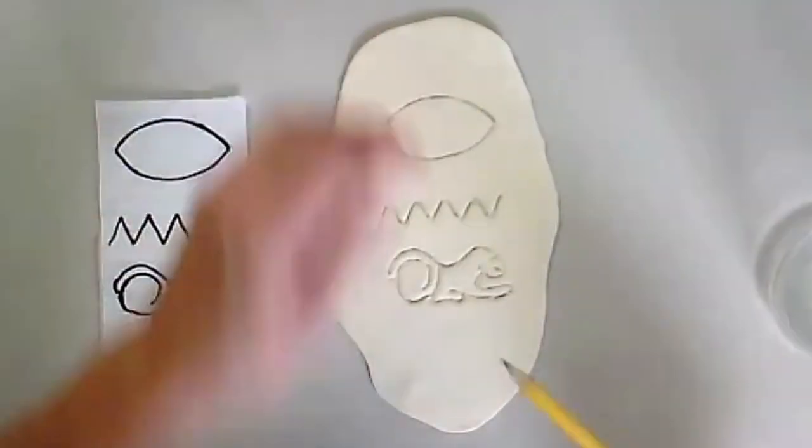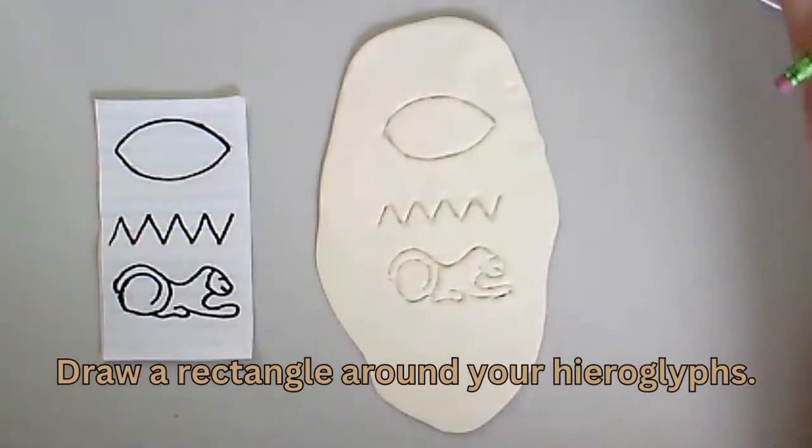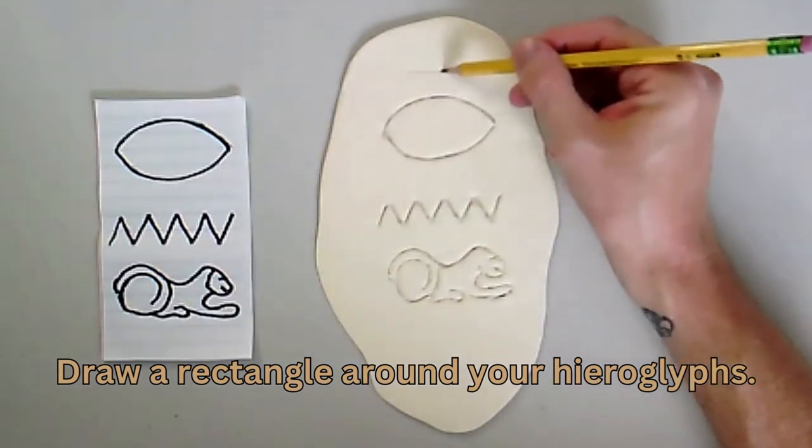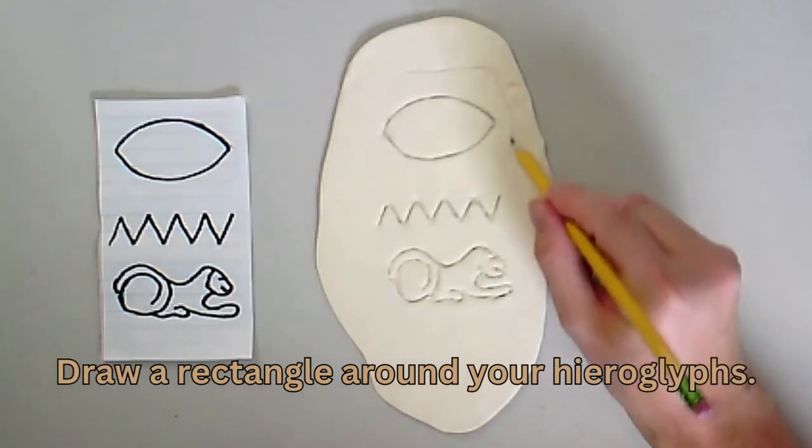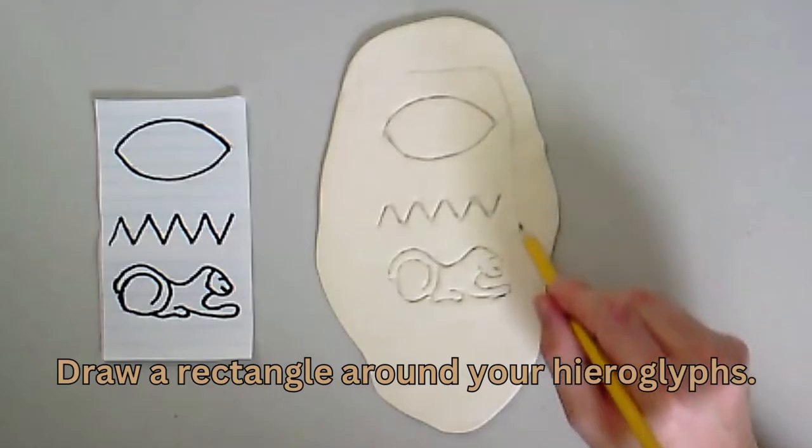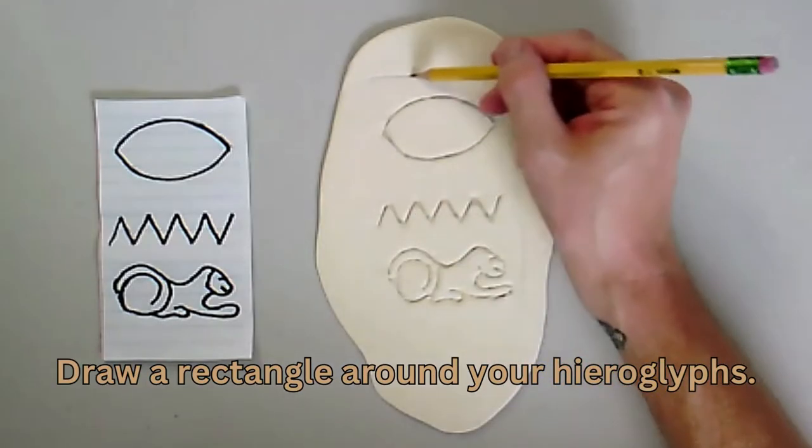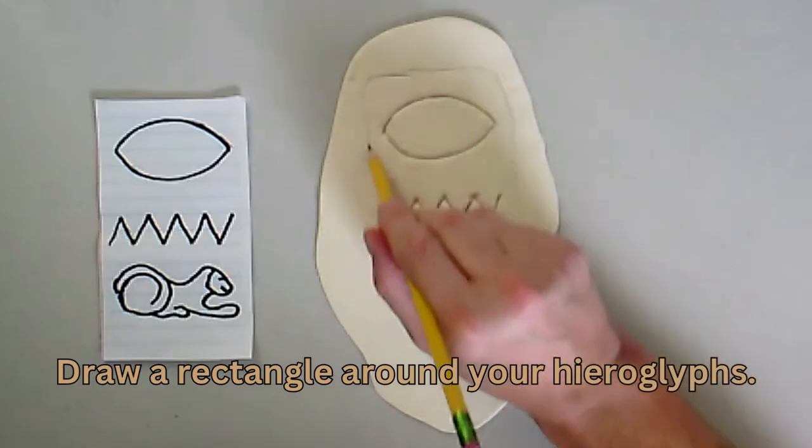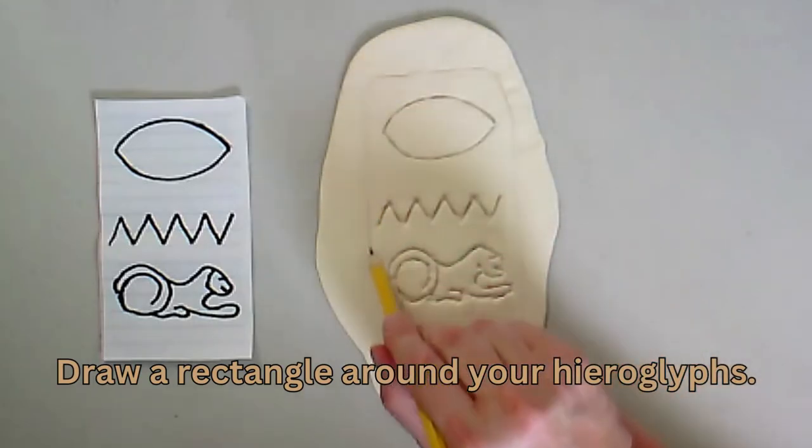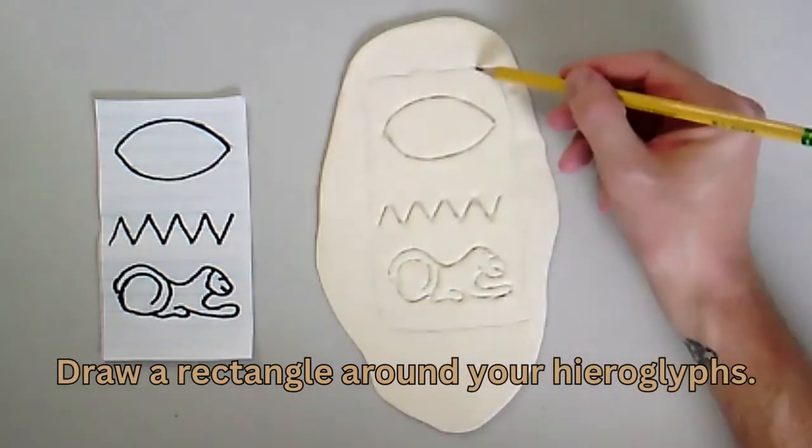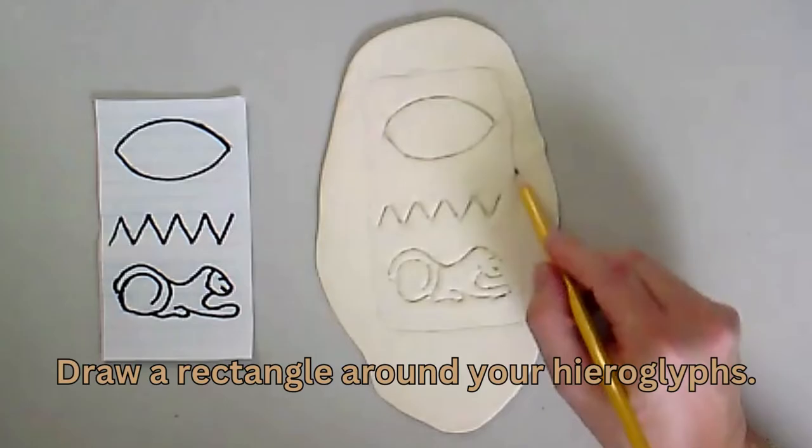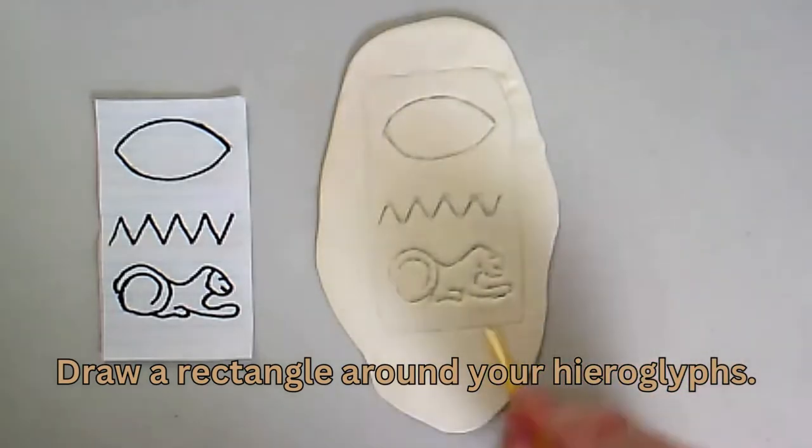Our next step is to draw the cartouche. So we're just going to draw a rectangle shape around our hieroglyph letters. Just using your pencil, you start out with just a rectangle and then round the edges. We're going to be cutting this out. You can draw your rectangle with some rounded edges there.